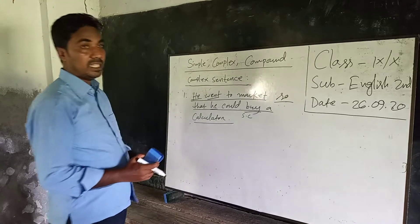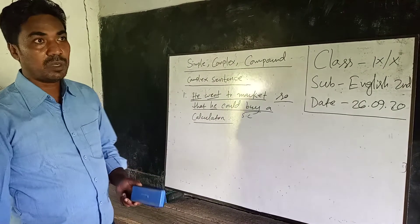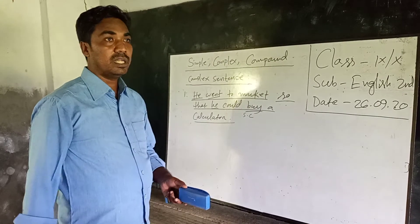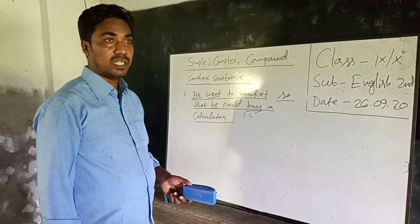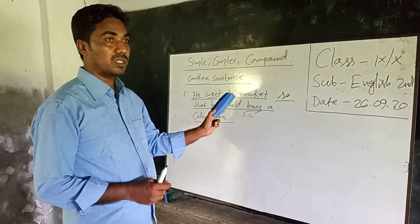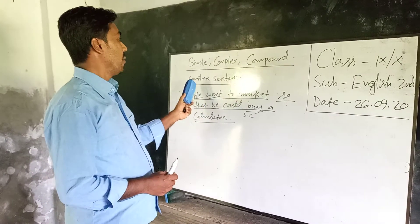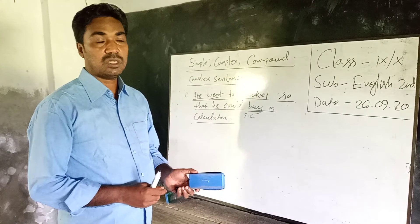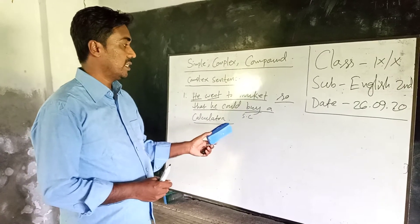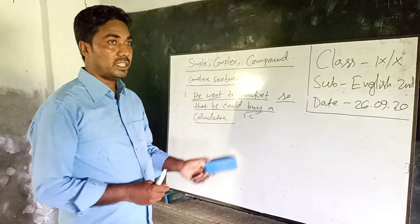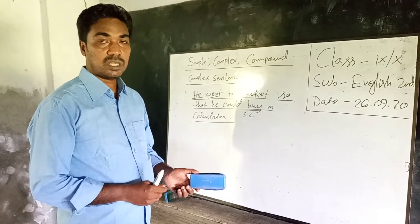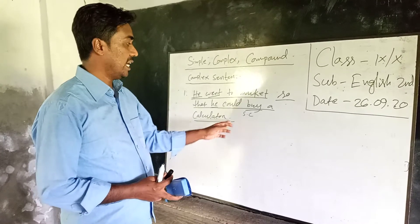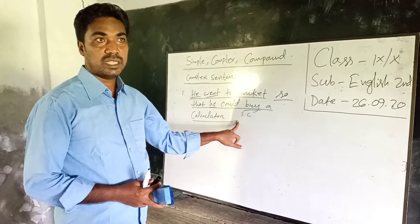Finally comes the compound sentence. A compound sentence has two or more independent clauses and there is no subordinate clause. These two independent clauses are joined with coordinating conjunctions such as 'and,' 'but,' 'or,' 'yet,' 'nor,' 'for,' 'so,' etc.